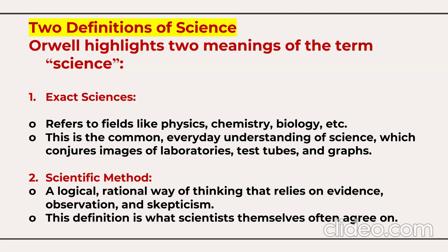The second meaning is the scientific method — a logical, rational way of thinking that relies on evidence, observation, and skepticism. This definition is what scientists themselves often agree on. So George Orwell highlights these two meanings of the term science: exact sciences and the scientific method.